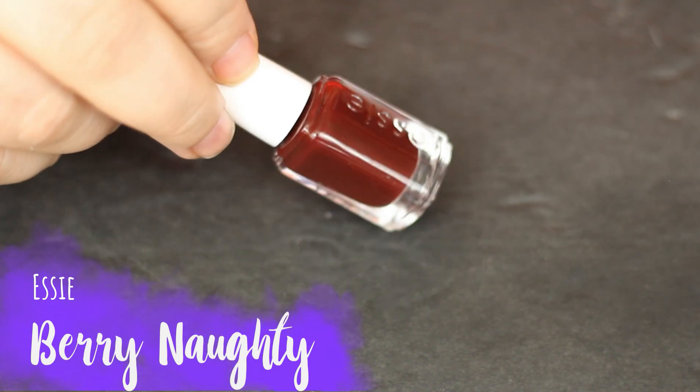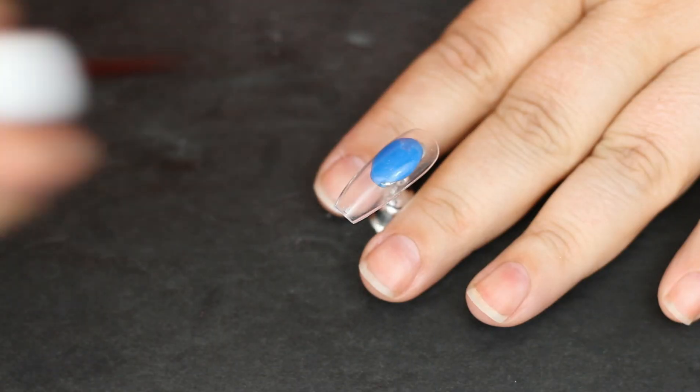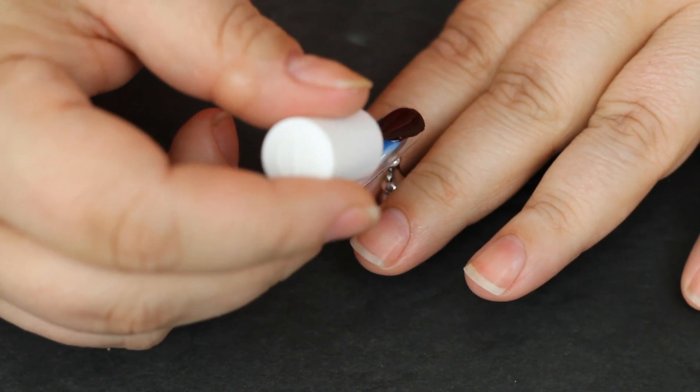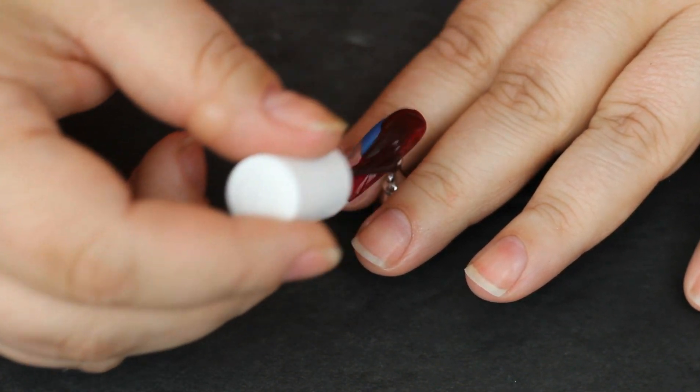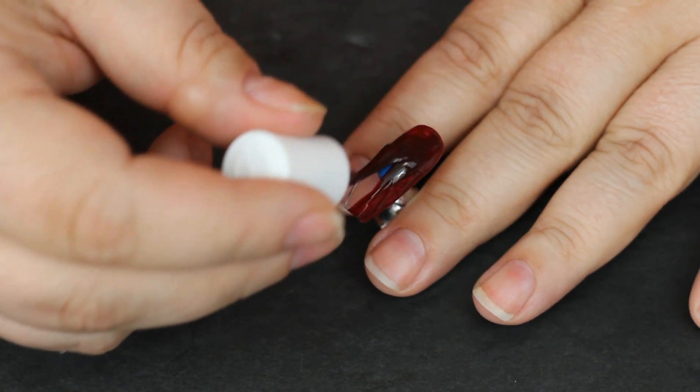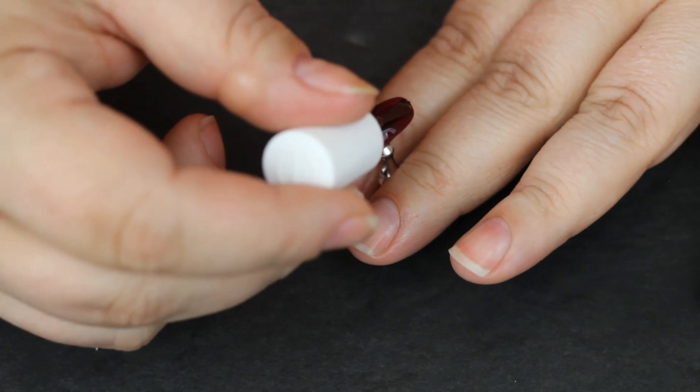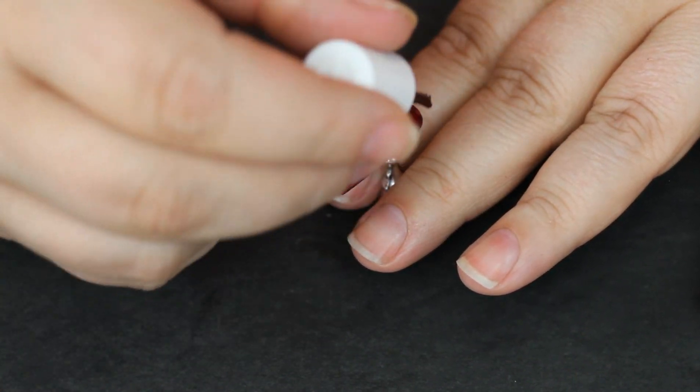Berry Naughty. This one is a jelly. I talked about jellies in my last video for doing pond manis and that kind of stuff. I think you could do this a little bit with this one. But this definitely gets super dark on the second coat. It's very vampy.